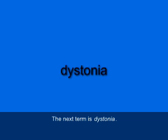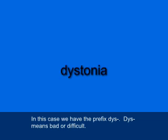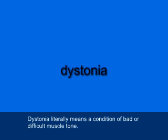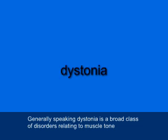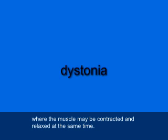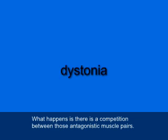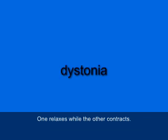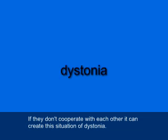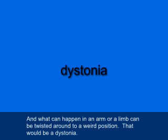The next term is dystonia, D-Y-S-T-O-N-I-A. In this case, we have the prefix dys, which means bad or difficult. So dystonia literally means a condition of bad or difficult muscle tone. Generally speaking, dystonia is a broad class of disorders relating to muscle tone where the muscle may be contracted and relaxed at the same time. There's a competition between antagonistic muscle pairs — one has to contract while the other relaxes. If they don't cooperate, it creates this situation of dystonia, and an arm or a limb can be twisted into a weird position.